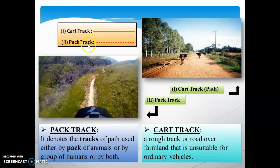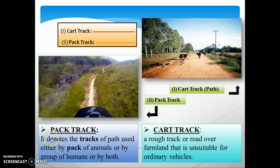For car track, the symbol is a continuous single red line. A car track is a rough track or road over farmland that is unsuitable for ordinary vehicles. For pack track, the symbol is a discontinuous single red line. Pack track denotes tracks or paths used either by pack animals, a group of humans, or both.